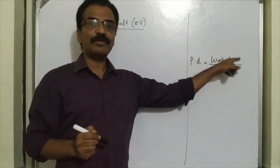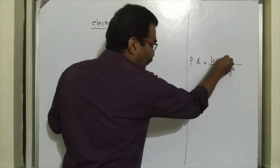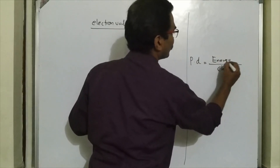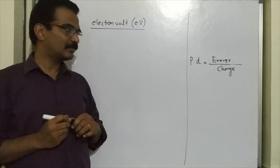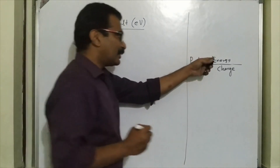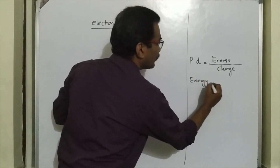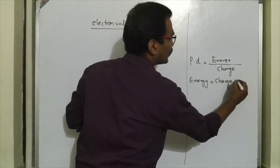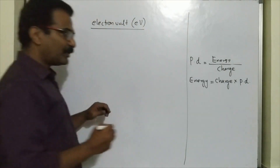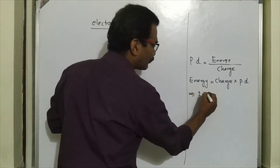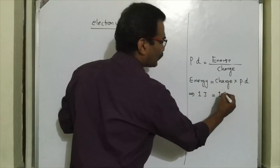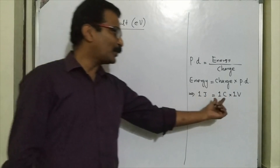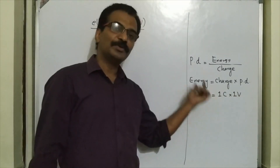So potential difference equals energy spent divided by charge. Rearranging, energy equals charge multiplied by potential difference. The unit of energy is joule, so 1 joule equals 1 coulomb multiplied by 1 volt. We will need this relation.